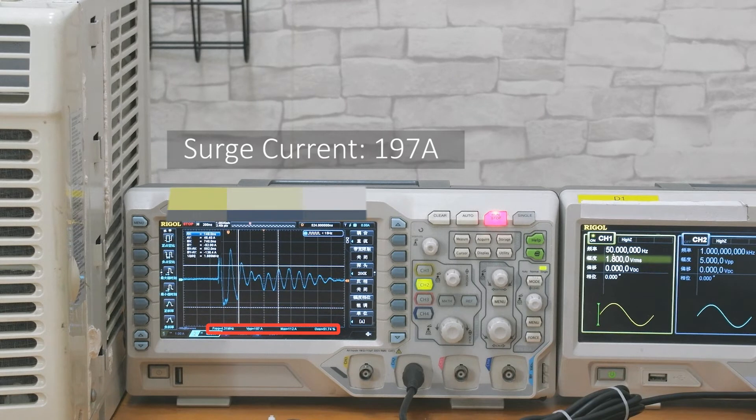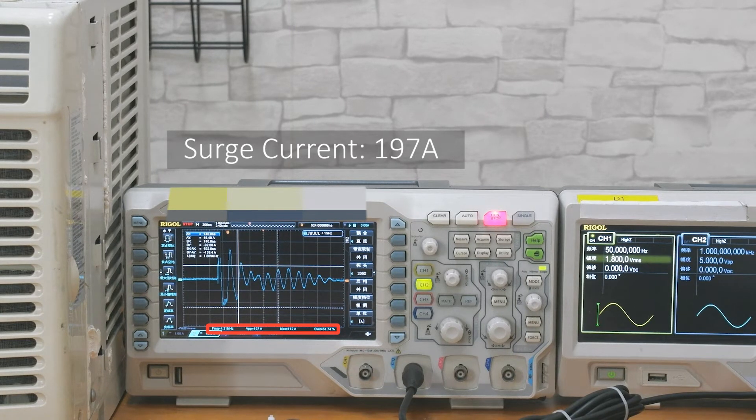It can be seen that the surge current has reached 197 Amp when it is turned on.